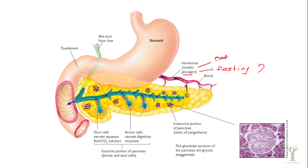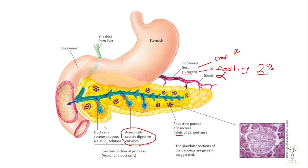Only about two percent of the cells in the pancreas make hormones — we call these the islet of Langerhans cells, and there are two main types. The alpha cells produce glucagon and the beta cells produce insulin. The acinar cells are the ones that secrete digestive enzymes, and we also have cells in the ducts that will secrete bicarbonate — sodium bicarbonate.